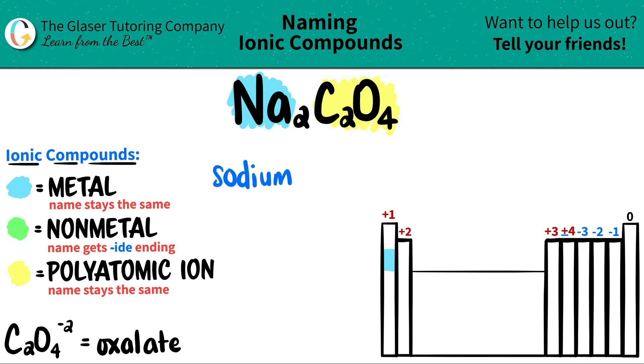This is a polyatomic and polyatomic ions, their names always stay the same. So that's pretty easy, but you just have to remember what they are. The periodic table isn't really going to help you. So I have to remember that C2O4 is oxalate.